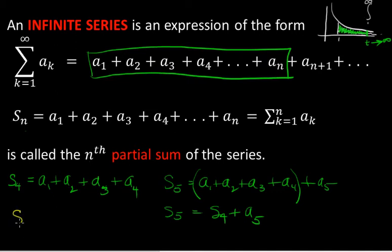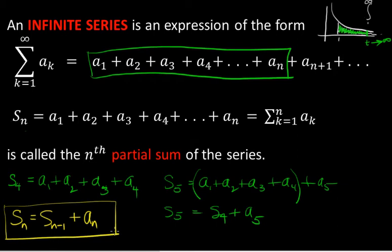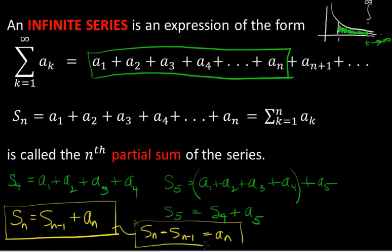It's always true that S_n equals the partial sum right before it, S sub n minus 1, plus the nth term of the sequence that you are summing. This tells you that if you subtract a partial sum from the one right above it, you will always get A sub n. These relationships between the sequence of partial sums and the sequence of terms are handy to remember in problems.